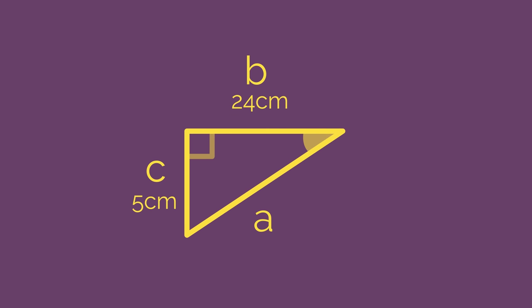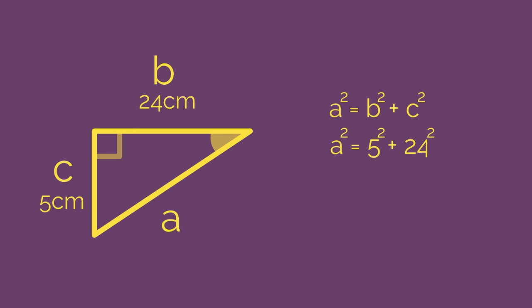Start by labelling the longest side as A and then B and C are the short sides. And using Pythagoras' theorem, A squared equals 5 squared plus 24 squared. And we get A squared equals 601. Remembering to square root, so square root 601 and we get A equals 24.5 centimetres.